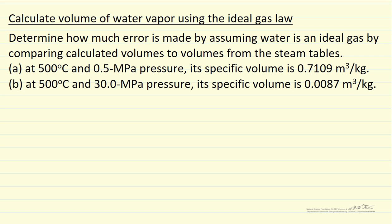Here we want to calculate the volume of water vapor using the ideal gas law, and then compare it to values from the steam tables at 500 degrees C and two pressures. We looked up the values from the steam tables — those are the values here — and let's use part A.